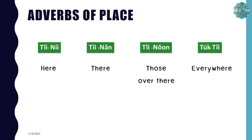Now let's move on to adverbs of place. The first one is ที่นี่, which means 'here.' The next one is ที่นั่น, which means 'there.' The next one is ที่โน่น, which means 'over there.' And the last one is ทุกที่, which means 'everywhere.'